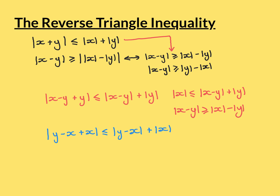To get the second statement it's exactly the same trick. This time I let y minus x take the place of x and let x take the place of y. By the triangle inequality, mod of y minus x plus x is less than or equal to mod of y minus x plus mod of x. This simplifies to mod of y is less than or equal to mod of y minus x plus mod of x. Rearranging and using the fact that mod of y minus x equals mod of x minus y, I get mod of x minus y is greater than or equal to mod of y minus mod of x — which is the second statement.